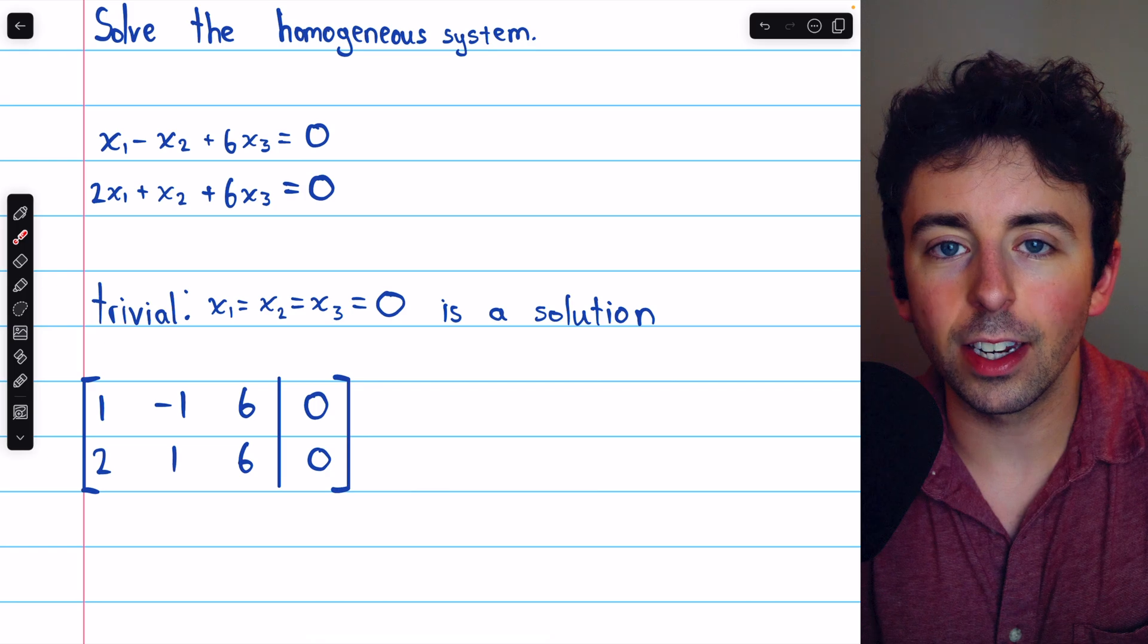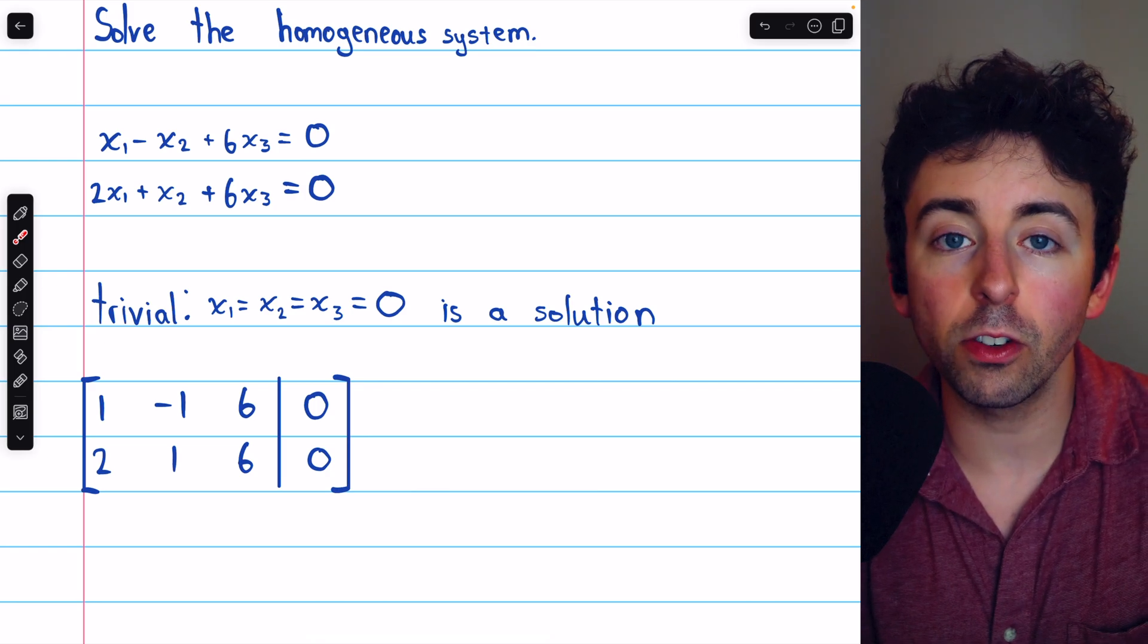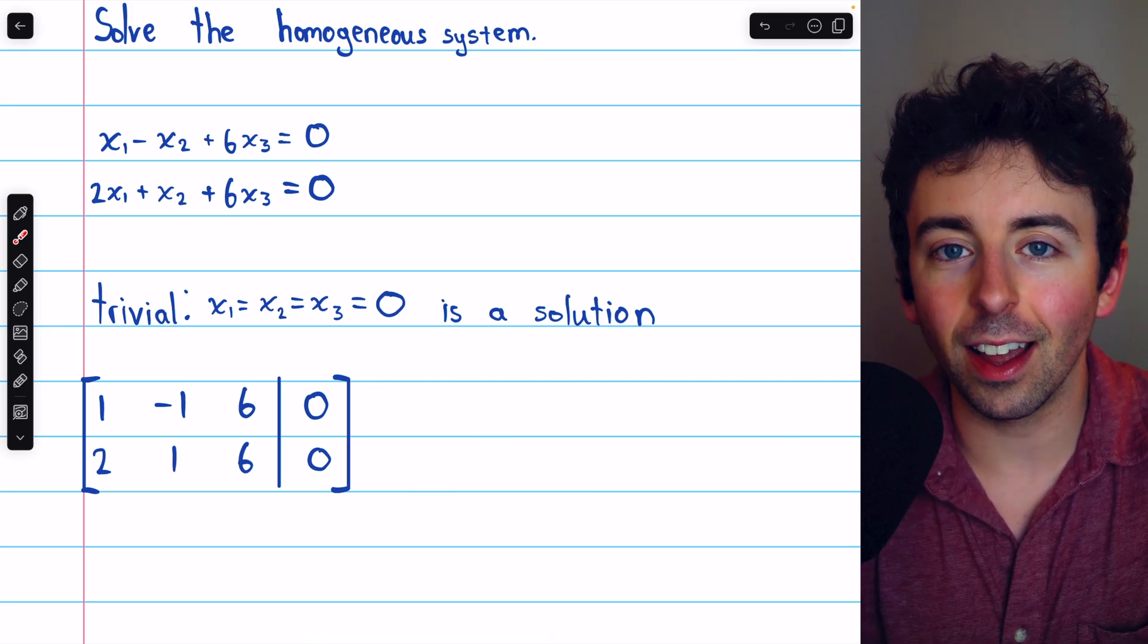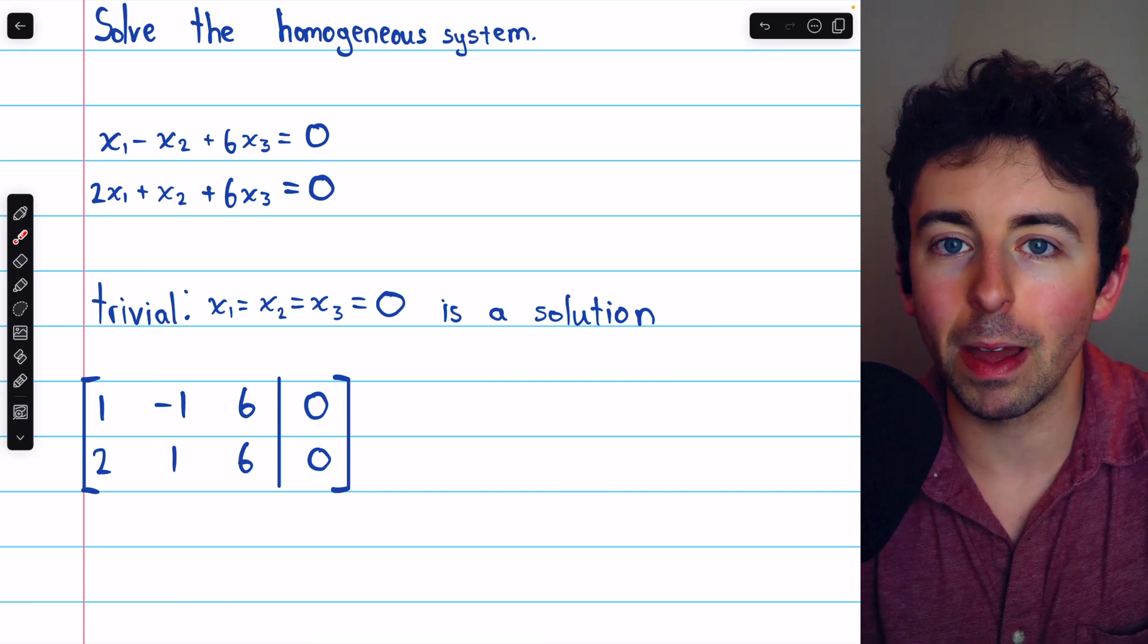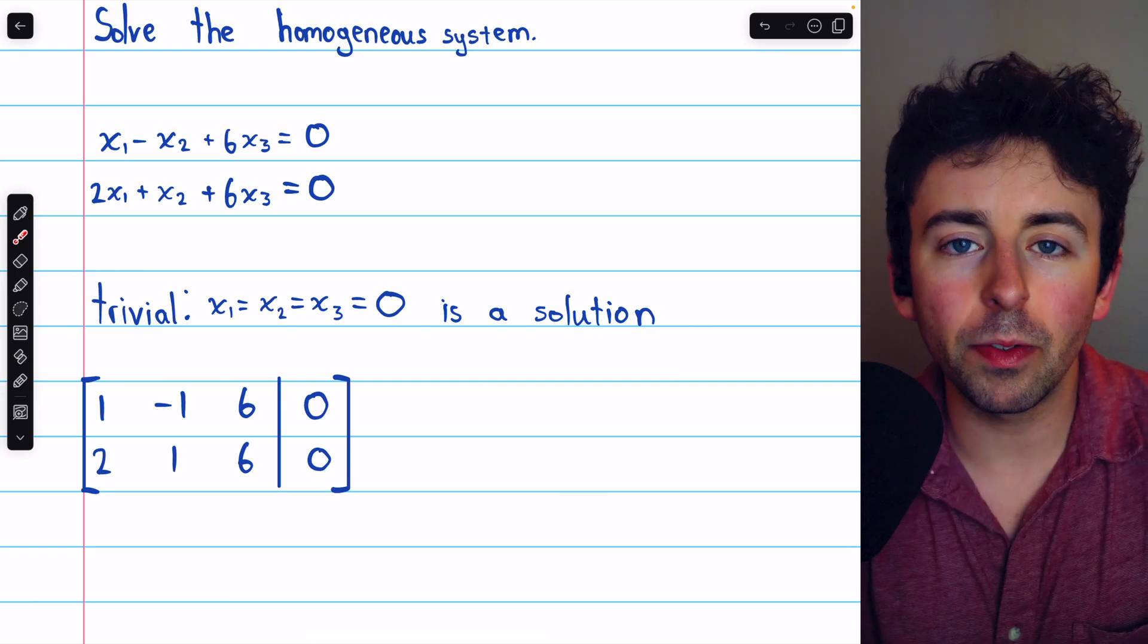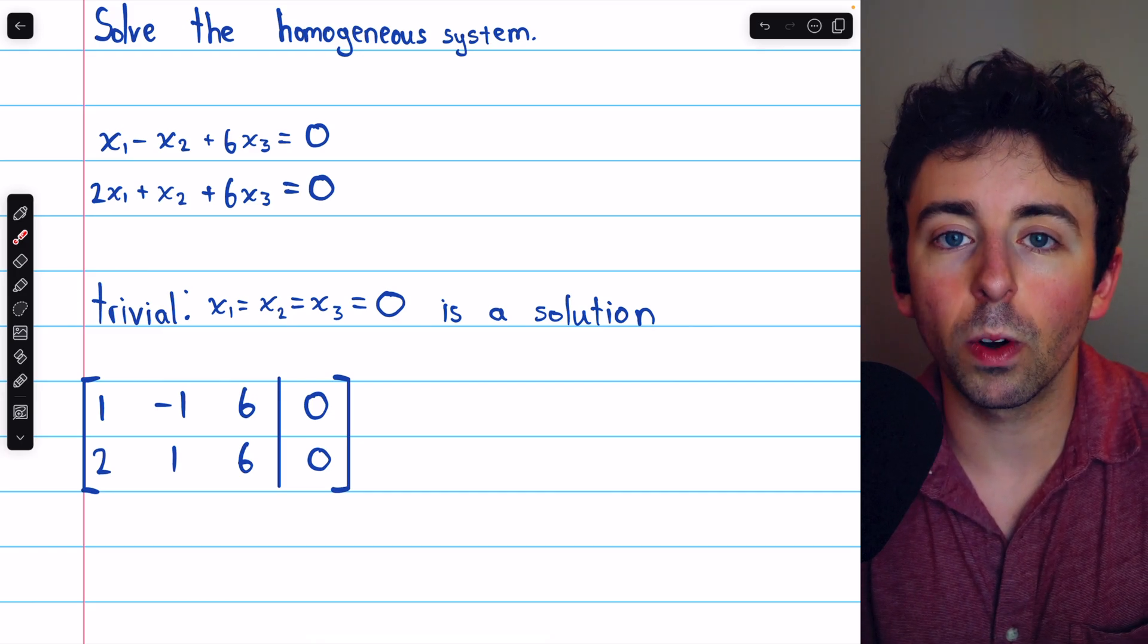Of course, a homogeneous linear system may also have non-trivial solutions. And if it does, it will always have infinitely many of them. We can figure out if it does by performing Gauss-Jordan elimination.